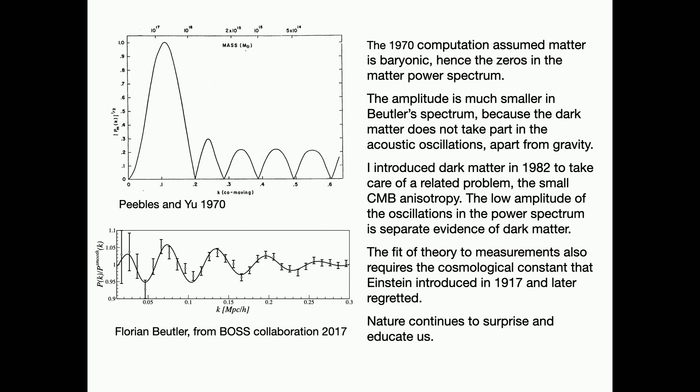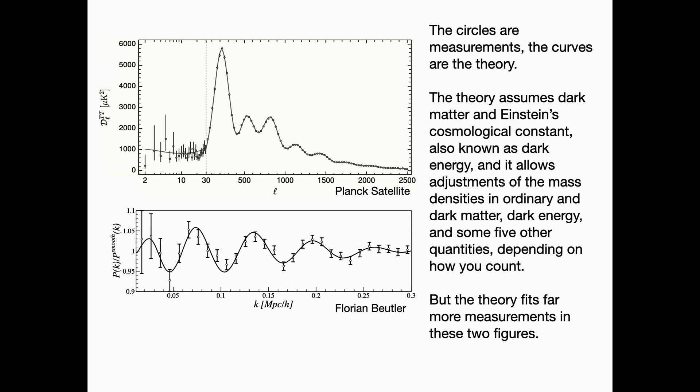And we look again at the power spectra of matter distribution down below, as measured by galaxy distributions, and above the spherical harmonic expansion of the radiation distribution, which is the analog of a Fourier transform in a sphere instead of a plane. The solid curves, the theory, the same theory for both, but applied to two very different phenomena, distributions of galaxies, angular distribution of radiation. One set of parameters fits both wonderfully well. It's spectacular.